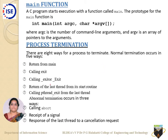Moving to the next section: in a C program we always have the main function, which takes two arguments — ARGC (command and arguments count) and ARGV (array of pointers to the arguments). Now, what do we mean by termination of a process?